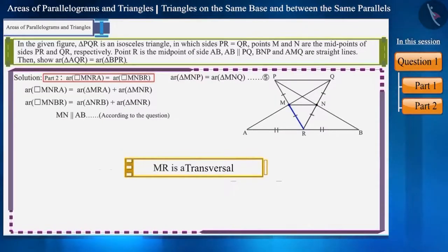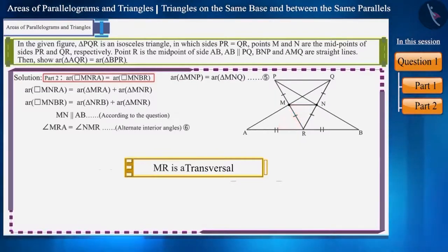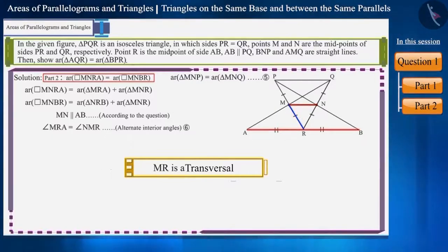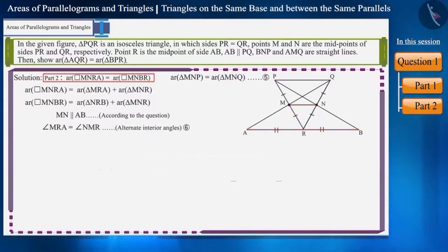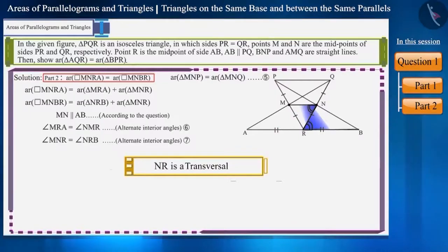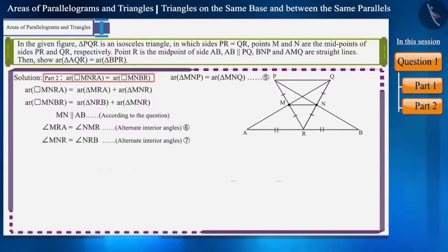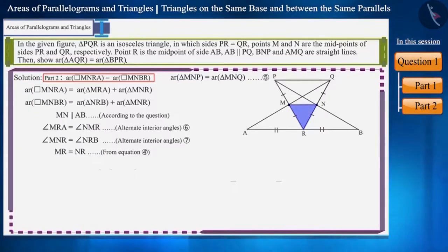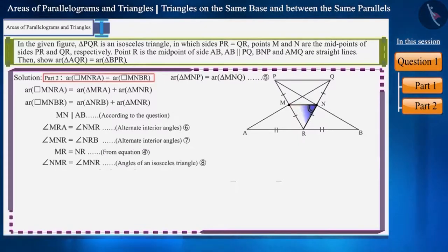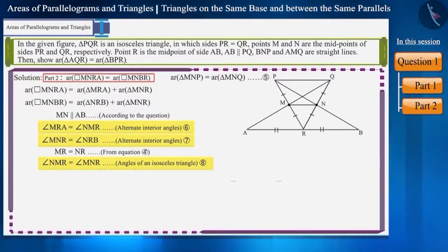If we consider MR as a transversal, then angle MRA and angle NMR will be alternate interior angles. We know that if a transversal intersects two parallel lines, then the alternate interior angles formed are equal. Therefore, these two will be equal. Similarly, angle MNR and angle NRB will also be equal. From equation 4, we know that MR and NR are equal, which means triangle MNR is an isosceles triangle. Therefore, angles NMR and MNR are equal. With the help of these equations, we can say that angle MRA and angle NRB are also equal.